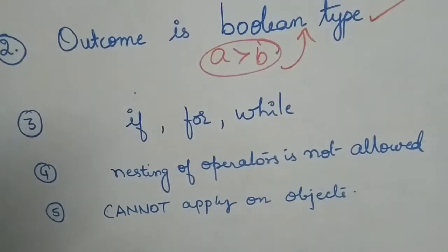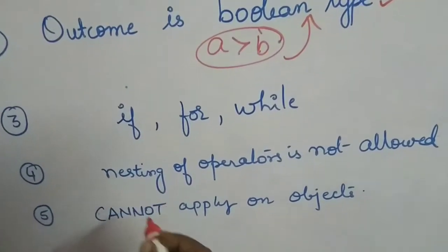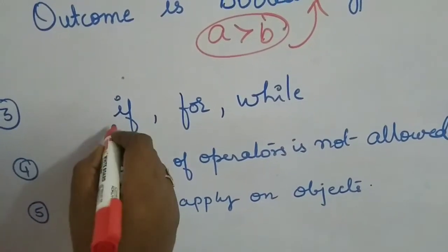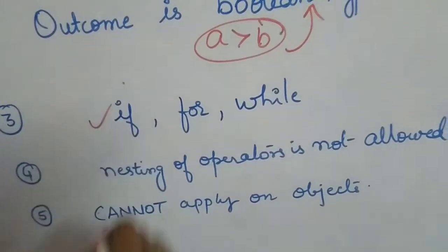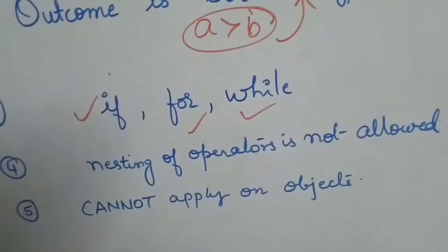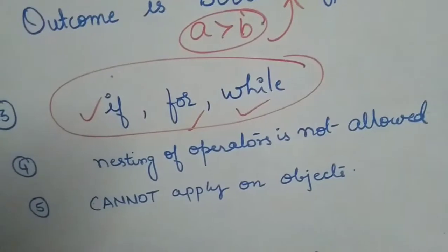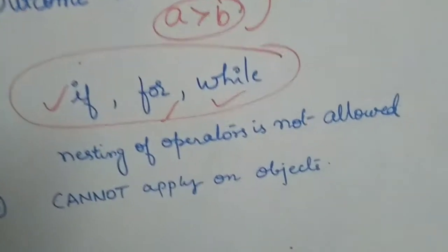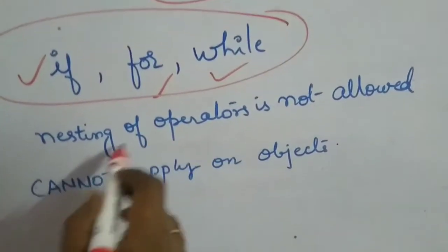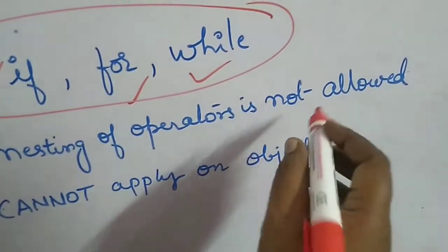These relational operators will be used in expressions that control if statements, for, and while loops. Generally they are used in if, for, and while. And the next rule is that nesting of relational operators is not allowed.